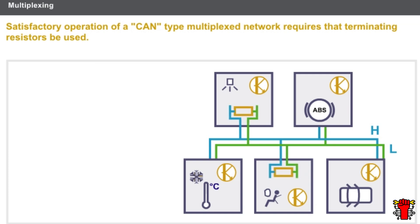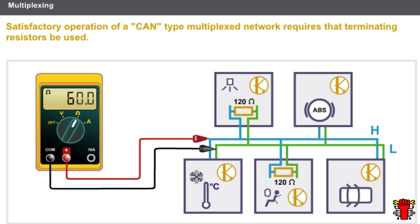Satisfactory operation of a CAN-type multiplex network requires that terminating resistors be used. These resistors enable the signals to be stabilised. The network has two terminating resistors of 120 ohms each, incorporated in two computers. These resistors are connected in parallel in the circuit, giving it a resistance of 60 ohms. The location of the terminating resistors varies depending on the vehicle.